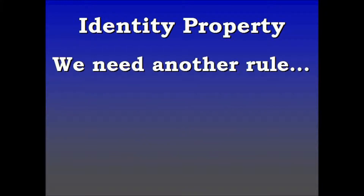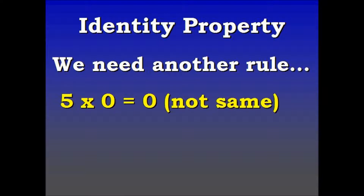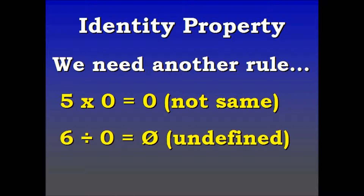Now if you're dealing with multiplication, you need a different rule. Here we have 5 times 0 — it does not give you the same number, it gives you 0. And 6 divided by 0 is undefined because you cannot divide by 0.